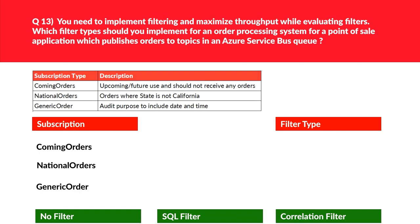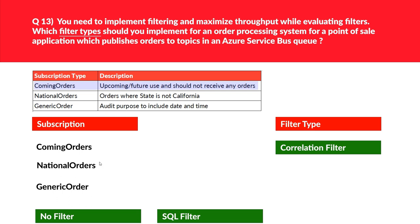This question is related to filter types. Let's look at the first statement: incoming orders. Looking at the table, incoming orders are not based on any specific property; they depend on an unpredictable property, hence 'correlation filter' looks good. We'll move this.